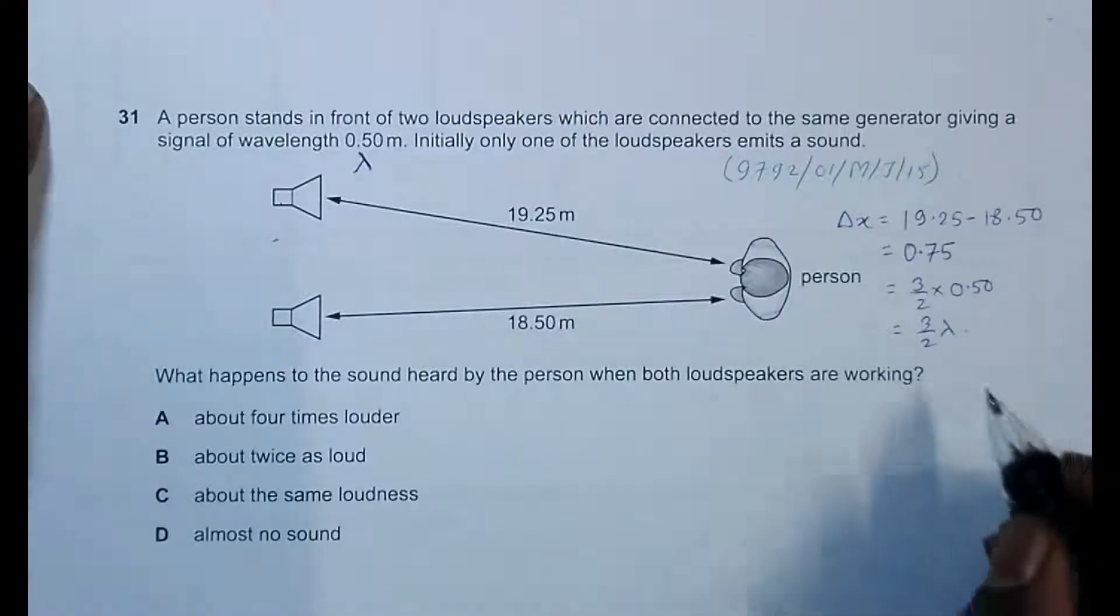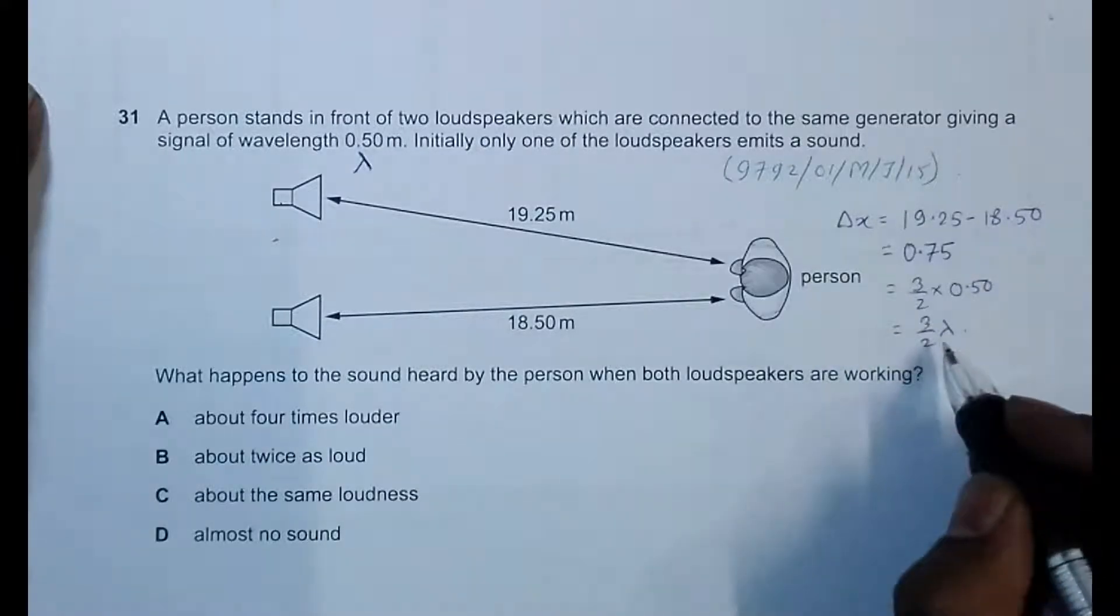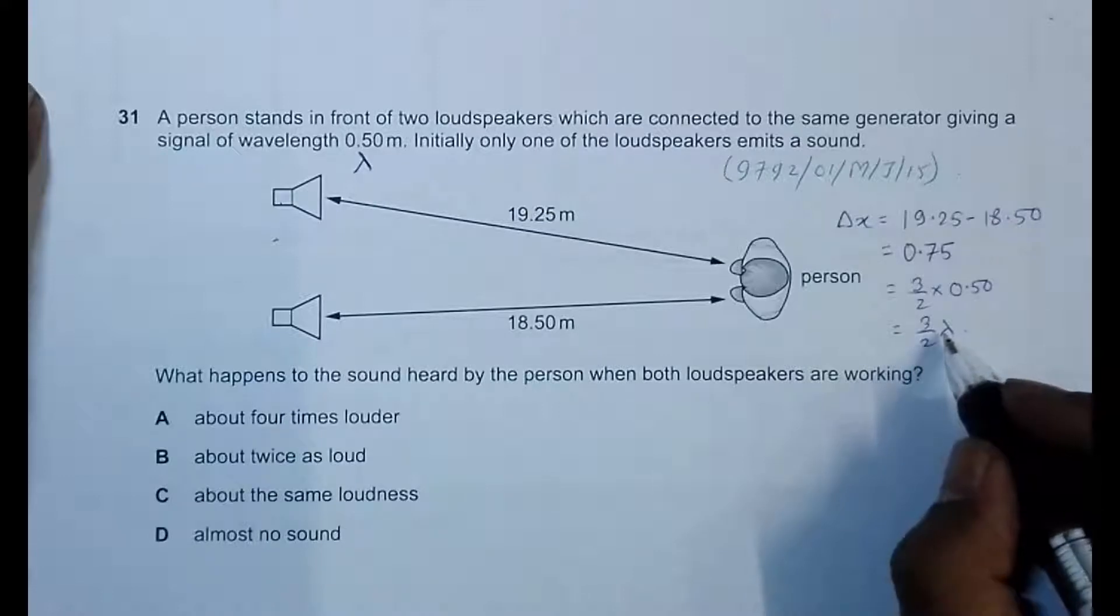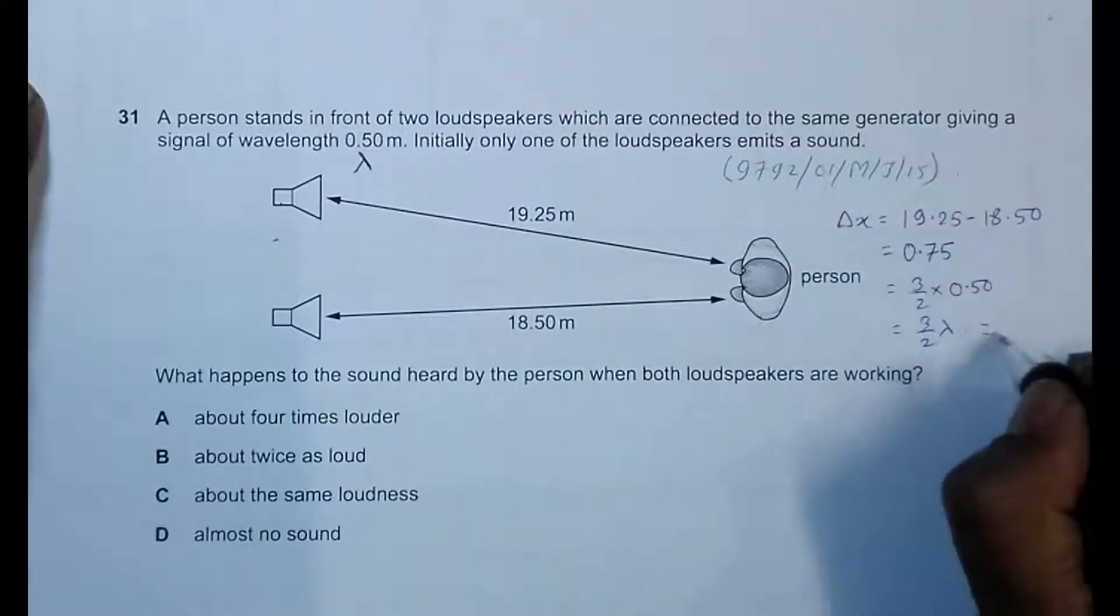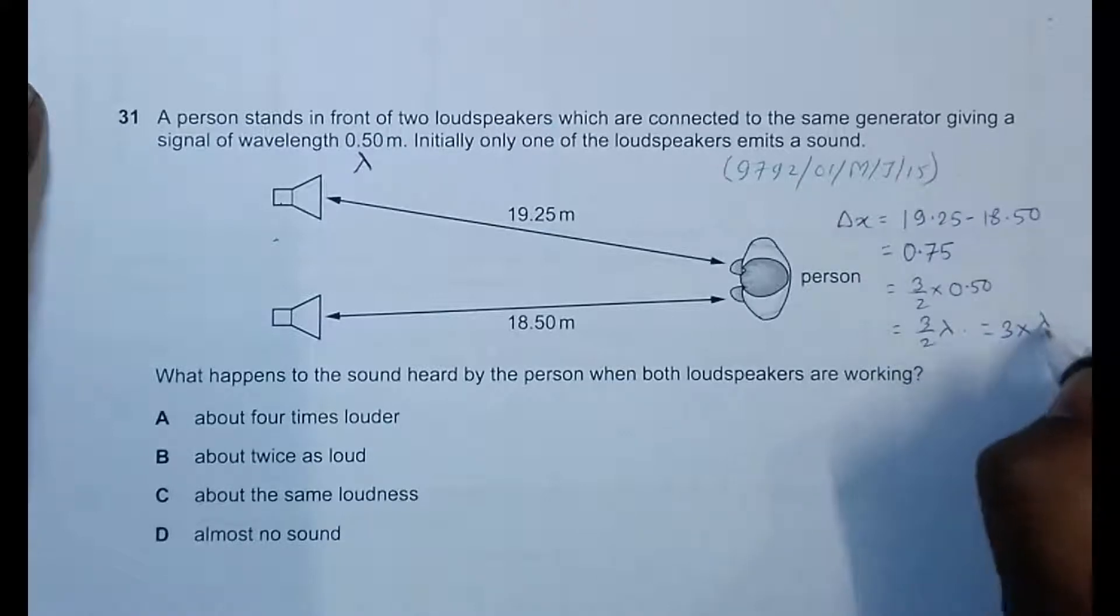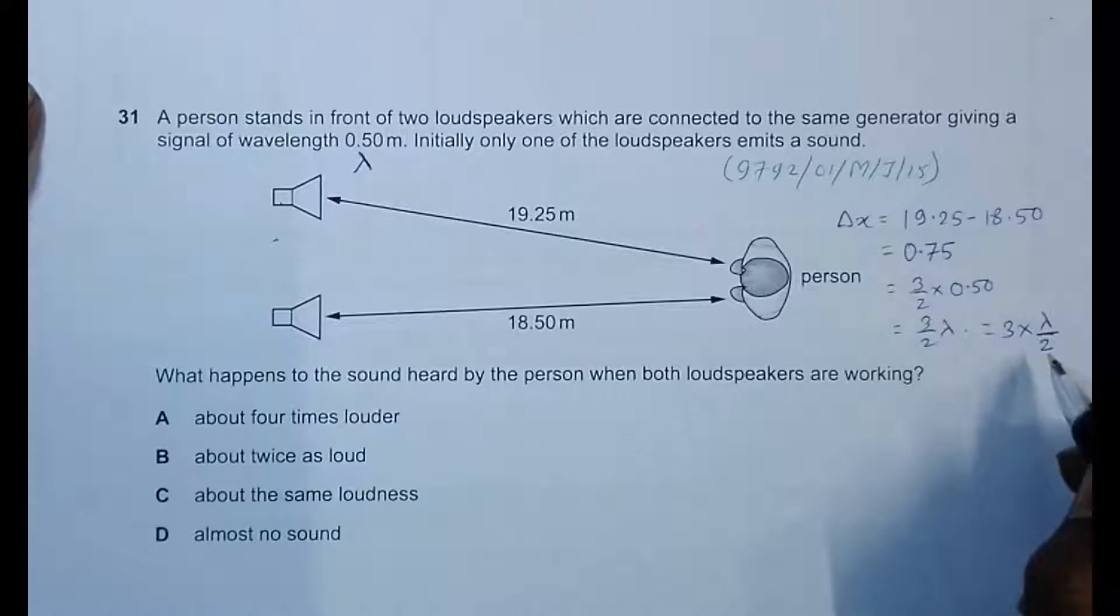Now the path difference is an odd multiple of lambda by 2. The path difference is odd multiple of lambda by 2, which means that there will be destructive interference there.